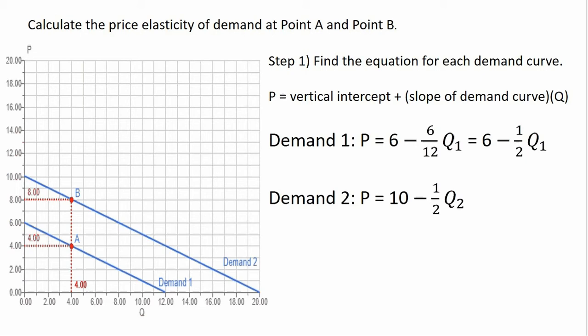In this example we want to calculate the price elasticity of demand at point A and point B. Step one, we want to find the equation for each demand curve. So the general equation for a linear curve looks something like this: P is our y variable, then we're going to take a vertical intercept and add the slope of that line to it and multiply it by our horizontal variable that is measured on the horizontal axis.